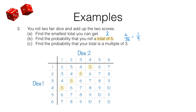For part c we need to find the probability that the total is a multiple of three. Looking at our sample space diagram: three, six, nine, and twelve are all multiples of three. I've highlighted in green all the multiples of three in the sample space diagram. Out of the 36 possible outcomes, twelve of them are multiples of three. So the probability that we get a total that is a multiple of three is 12/36, which simplifies to one third.